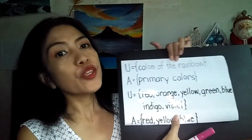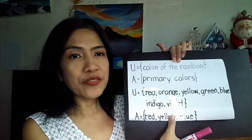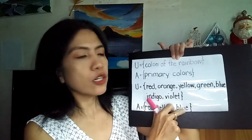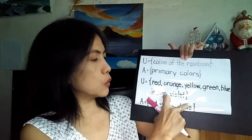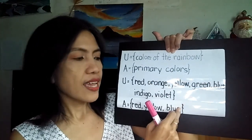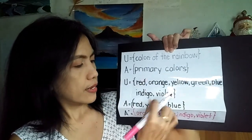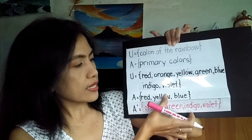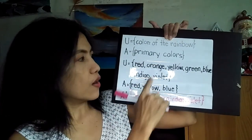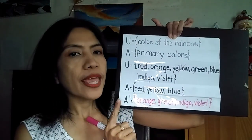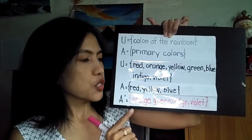Another example. We have here the universal set as the colors of the rainbow, and given set A as primary colors. So let's name them: we have red, orange, yellow, green, blue, indigo, and violet. Now let's cross out set A — red, yellow, and blue. So our A complement is orange, green, indigo, and violet. Those are the elements of the A complement.